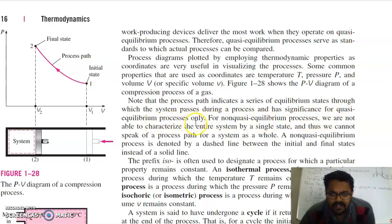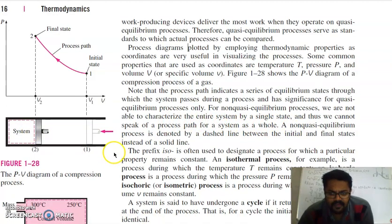For non-quasi-equilibrium processes, we are not able to characterize the entire system by a single state, and thus we cannot speak of a process path for a system as a whole. You can see here in this figure, from one to two, this is the process path of the process. At one, your volume is larger, pressure is lower. And when you go from one to two, your volume will start to decrease. At two, volume is less while pressure is higher. So there are two things that have changed: one is pressure, second is volume. It has converted to P2 and V2.